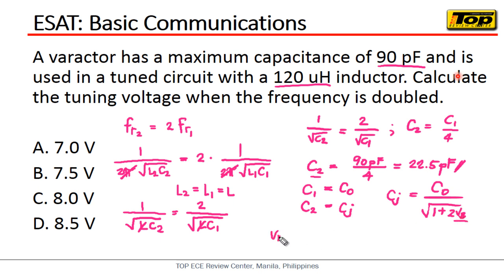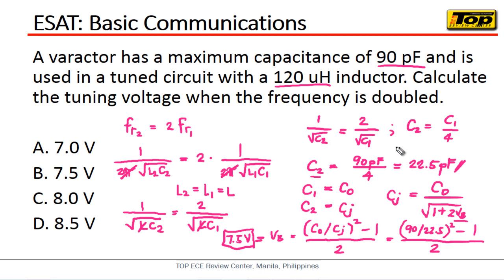Okay, so we can now solve for VB. Right? So VB is simply equal to C sub 0 over CJ, and then we take the square of it and then minus 1 all over 2. So this is equal to 90 over 22.5, take the square of that, minus 1 and then divide it by 2. So we'll get VB. Of course it's very easy now. Oops, it disappeared. Let's bring it back. Alright, magic - it came back. So what will be our answer now? Our VB is equal to of course 7.5 volts, and that is letter B. 7.5 volts. Very easy, right?